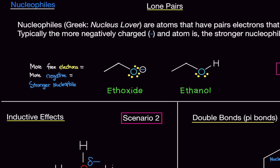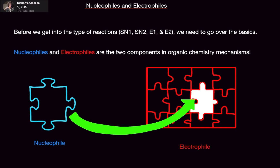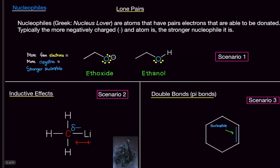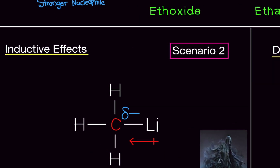Going back to the puzzle analogy: if we had two similar puzzle pieces but one was slightly off, the one that is more negative — that has more electrons — is going to fit better and be more reactive. It's like a supercharged missile compared to a regular one. The US military spends billions on high-end missiles versus standard ones — that's the difference in nucleophile strength.